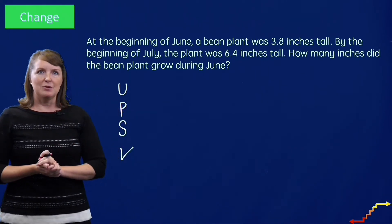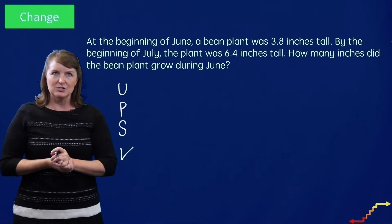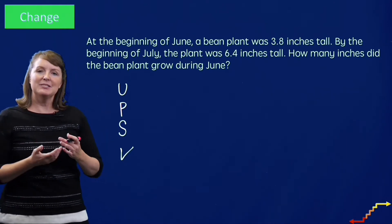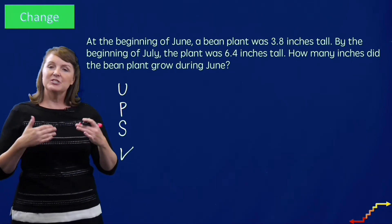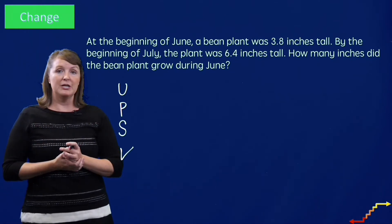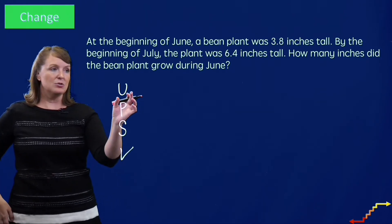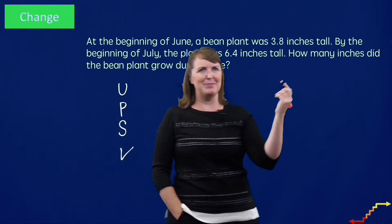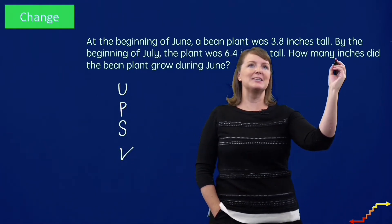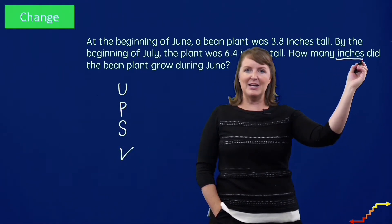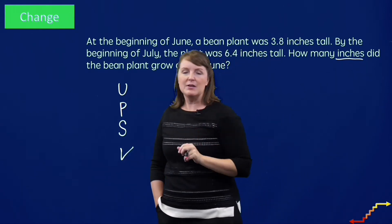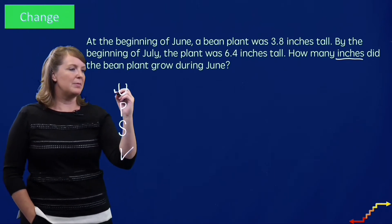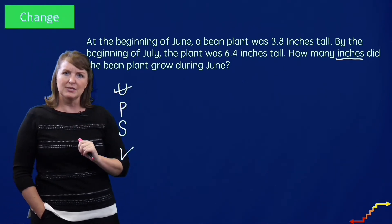We understand the problem by reading it: at the beginning of June, a bean plant was 3 and 8 tenths inches tall. By the beginning of July, the plant was 6 and 4 tenths inches tall. How many inches did the bean plant grow during June? So in this story, I'm focused on the inches the bean plant grew. I'm going to underline 'inches' to help me focus on any numbers that deal with inches. I've got a pretty good understanding of this word problem, so I'll check off the U.